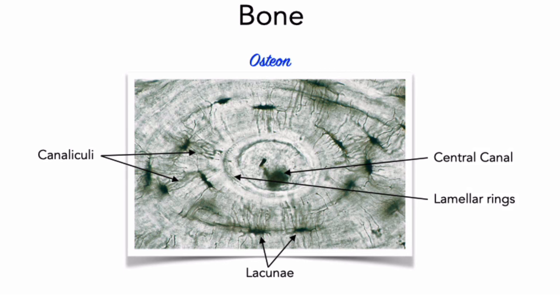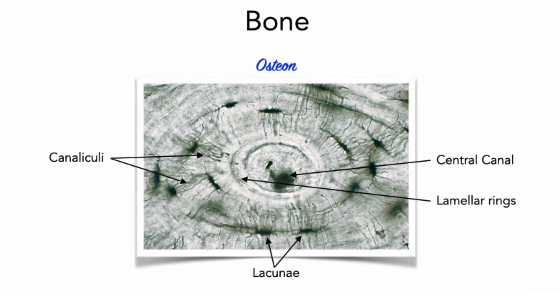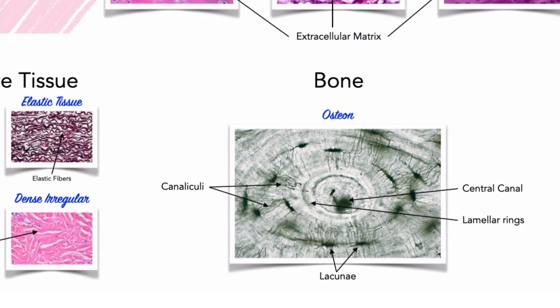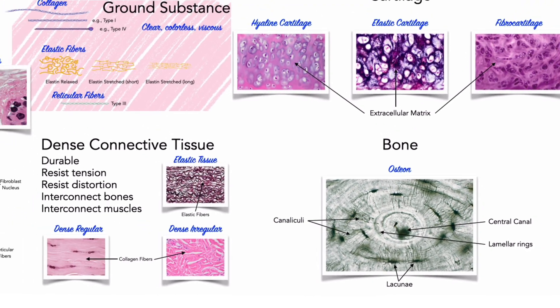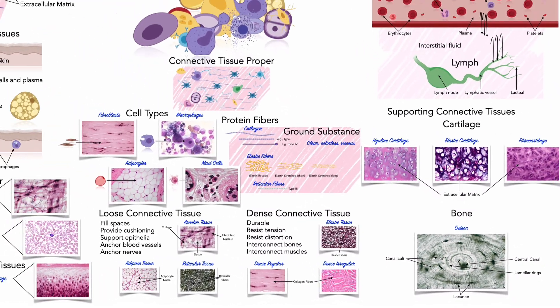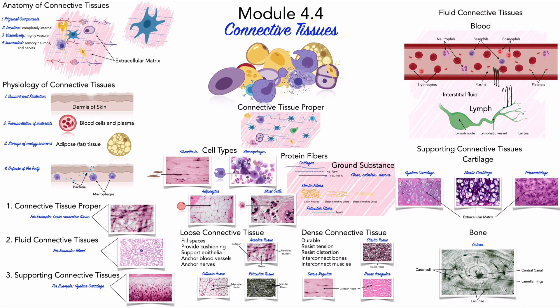Unlike cartilage, bone is constantly being remodeled throughout life; therefore, complete repairs can be made even after severe damage. Having now looked at both epithelial and connective tissues, we will next examine tissue membranes. Tissue membranes are physical barriers in the human body made of both epithelial and connective tissues, and there are four distinct tissue membranes that serve as these physical barriers.